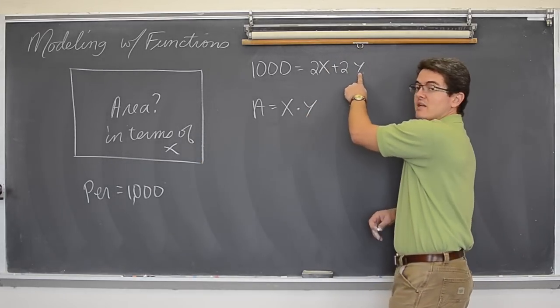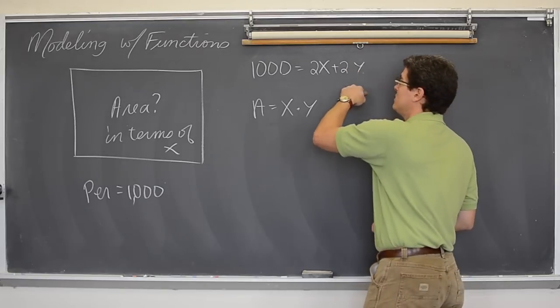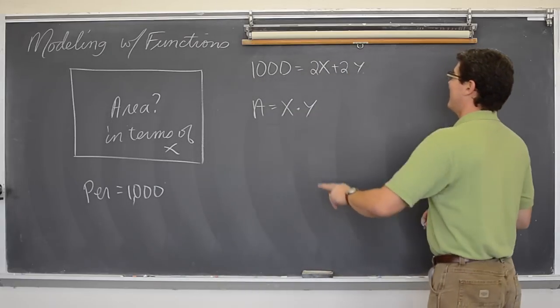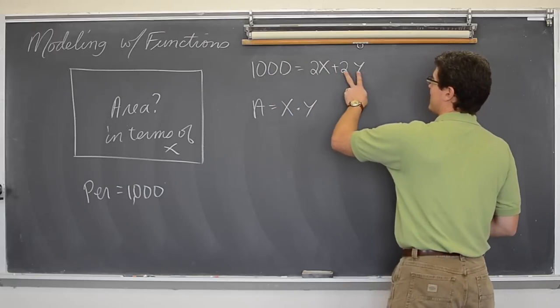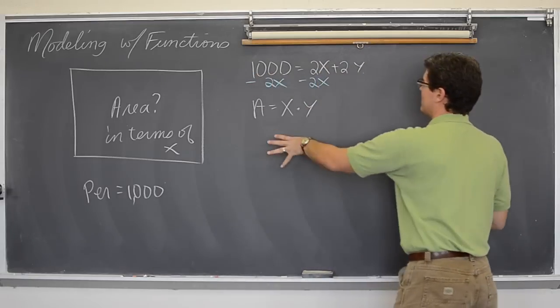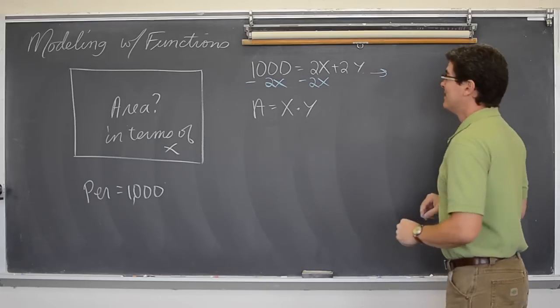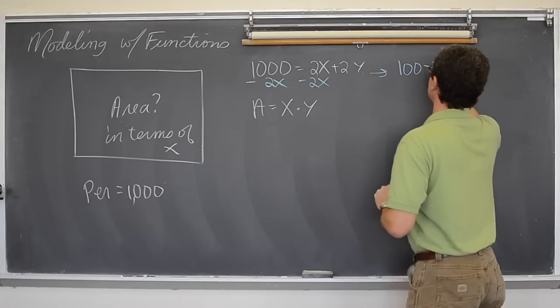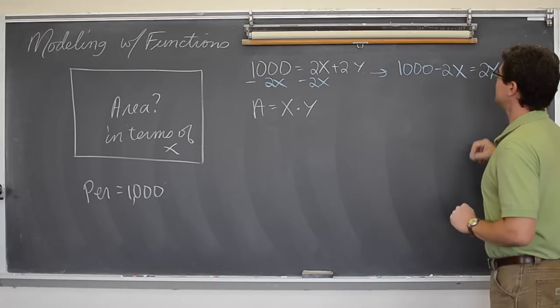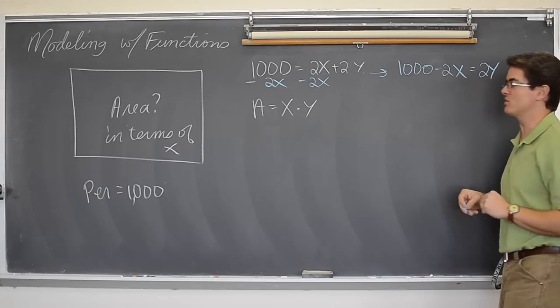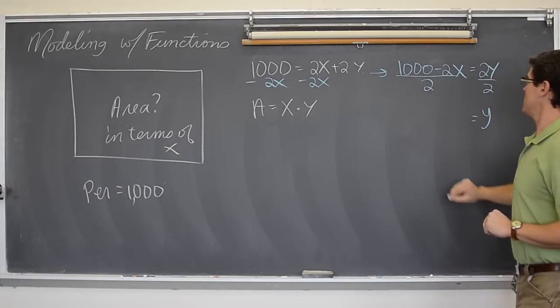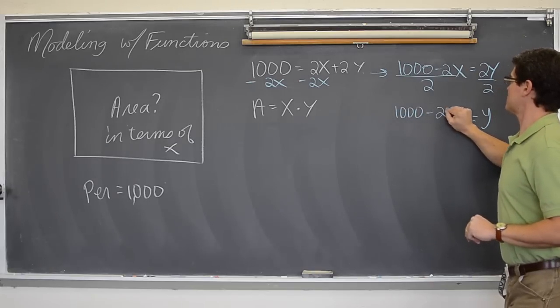To do that I am going to take my first equation and solve it for y, so I can use it to then plug into the other equation. So let's take the perimeter and we are going to solve it for y. So I am going to subtract both sides by 2x. So 1000 minus 2x, that would be... 1000 minus 2x is equal to 2y.